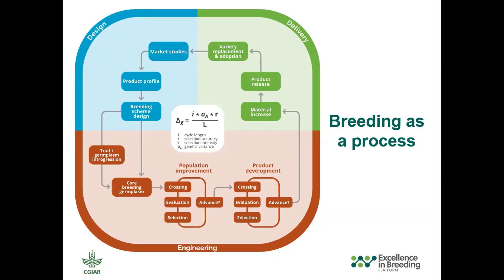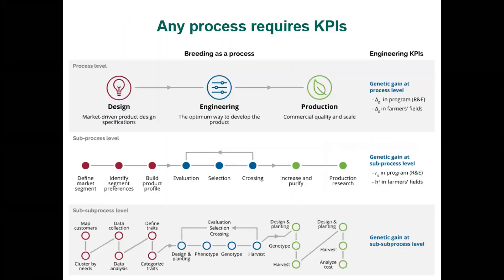When looking at this high-level representation of the breeding process, you might be able to identify in which particular steps you mainly contribute in your organization — whether in the design of the products, the engineering of the products, the population improvement, product development, or you might be more involved in the delivery of the products. Once these processes have been identified, you can link them to different tasks and decisions that occur at each step. You can go to a high level or a lower level to come up with more detail on the different tasks and decisions, helping develop the right KPIs to monitor whether the process is occurring efficiently or needs additional improvements.